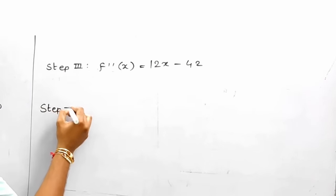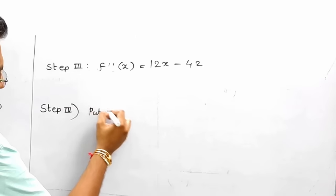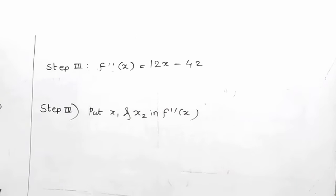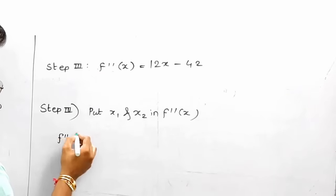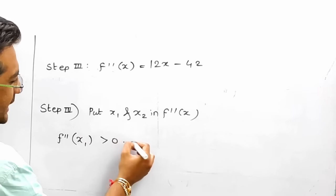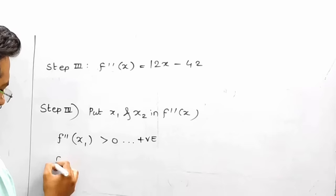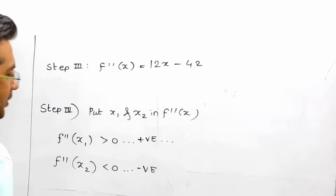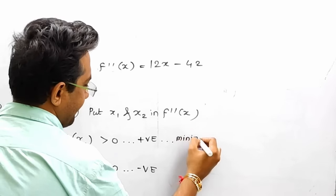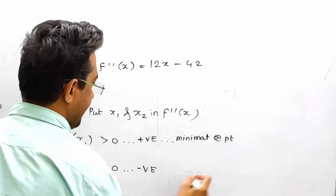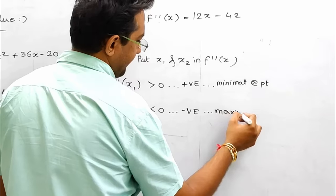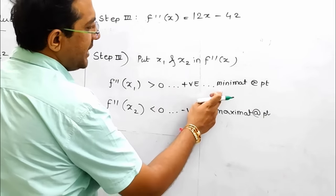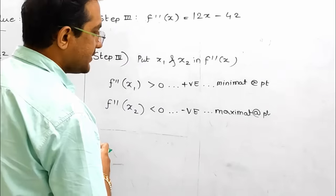Step number 4 is to put x₁ and x₂ into f''(x). There is a rule: if f''(x₁) is greater than 0, meaning it is positive, that means minima at that point. And if f''(x₂) is less than 0, meaning it is negative, that means maximum at that point. Memory trick: positive people get minimum problems, negative people get maximum problems.